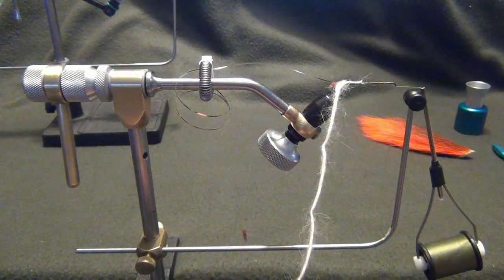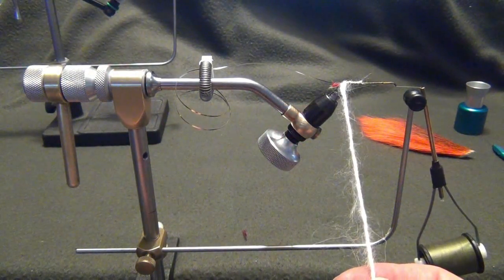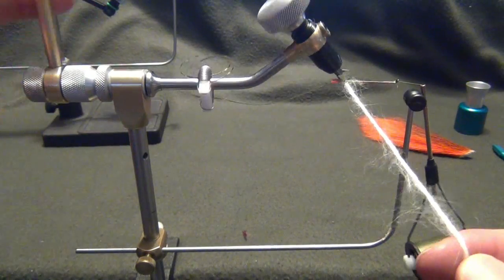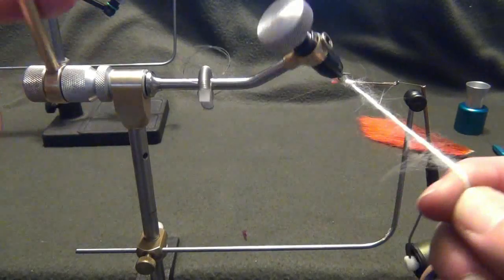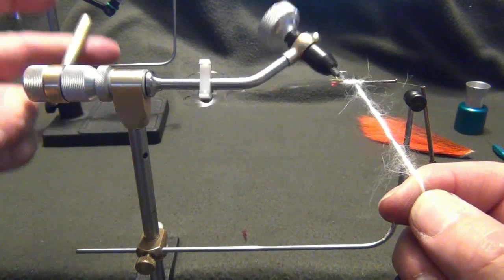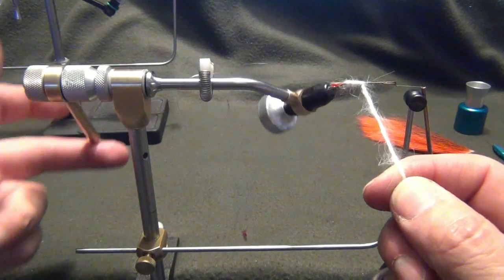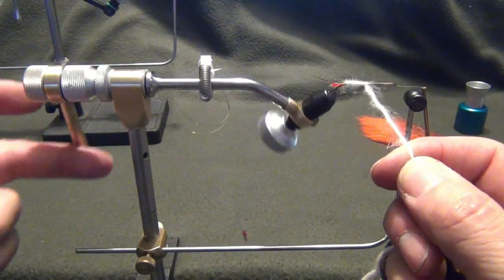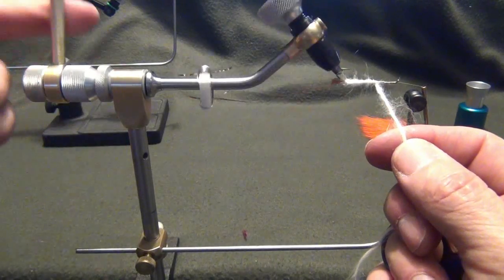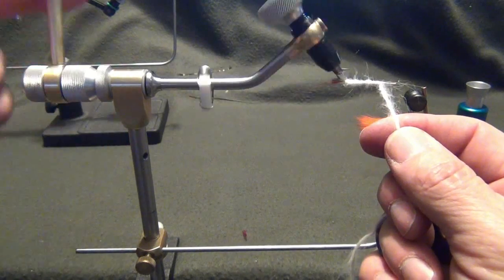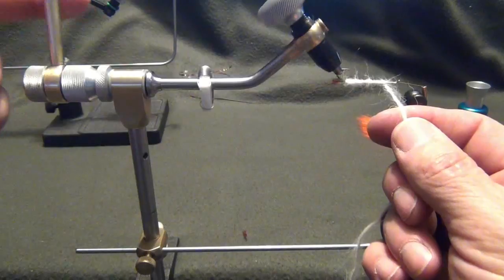If you have a rotary vise and use it only to look at the backside of the fly now and then, you might as well take the bobbin cradle off and put it in a drawer. But if you rotate the vise, if you use it to wrap ribs, hackles, bodies, anything where you're faced with the thread wrapping or unwrapping as you rotate the vise, that's where the bobbin cradle comes into play.